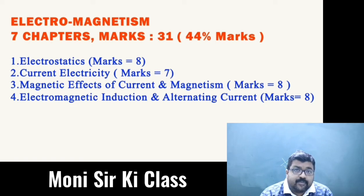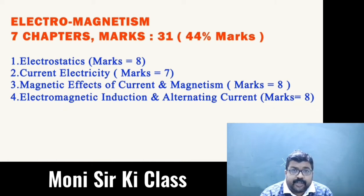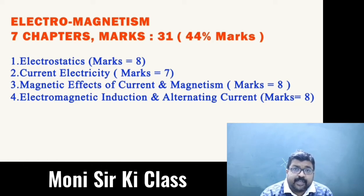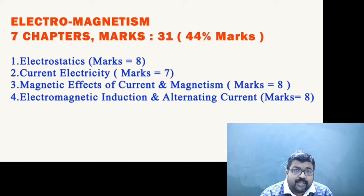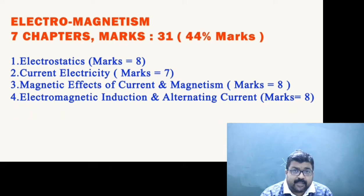Volume 1 of the NCERT textbook has 8 chapters, but I am going to cover the electromagnetism part — the first 7 chapters starting from Electric Charges and Fields going till Alternating Current. Electrostatics, which includes the first 2 chapters, carries 8 marks. Current Electricity carries 7 marks. Moving Charges and Magnetism carries 8 marks. Electromagnetic Induction and Alternating Current also carries 8 marks.